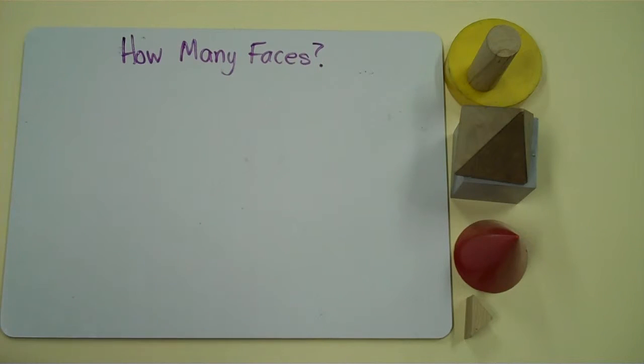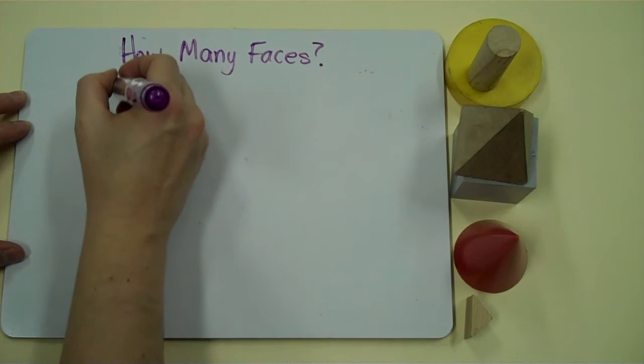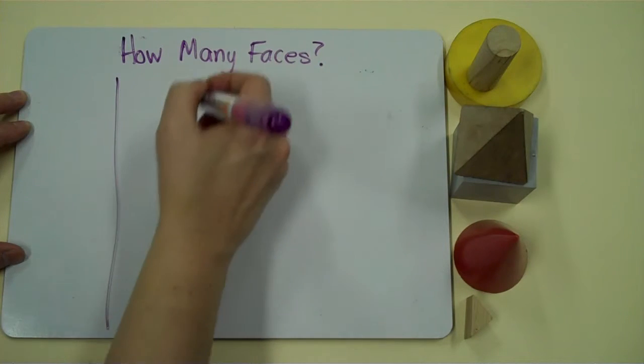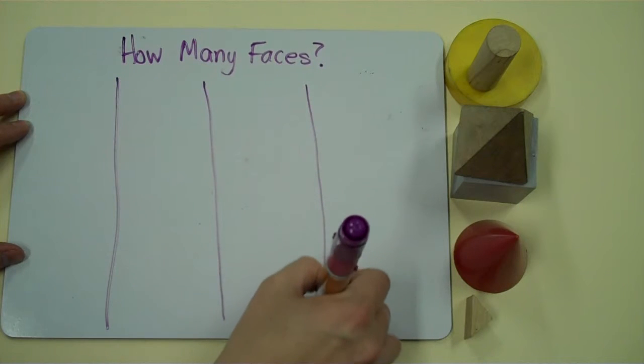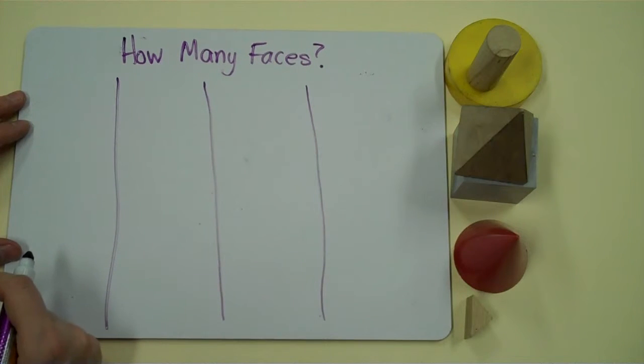So how many faces can objects have? Well, they have to have at least one face for it to be an object. So I'm going to take a look at the objects that I have here. None of my objects have one face, so I'm not going to use that as a group.